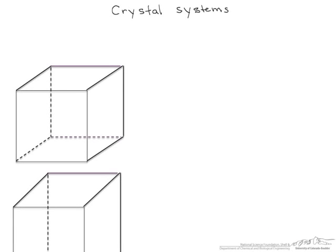In this screencast we're going to define some crystal systems and then give an example of a ceramic crystal structure. So there are seven basic crystal systems, and what these depend on are what are known as lattice constants.